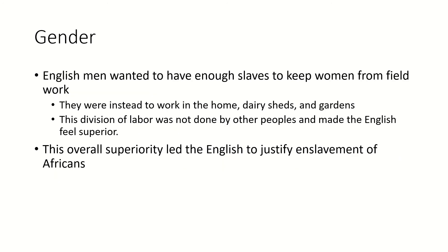The English ideal was to have enough hired hands and servants working on a farm so that wives and daughters didn't have to do manual labor — instead, they could work in the dairy sheds, small gardens, and kitchens. Obviously because of the labor shortage, white women still did have to do field labor. But this idealized gender division of labor contributed to the English conceiving themselves as better than other groups who didn't divide labor that way, including the West Africans who arrived on slave ships, and provided further justification for enslaving and subordinating Africans.